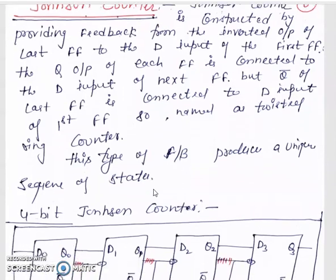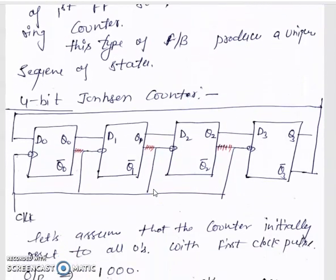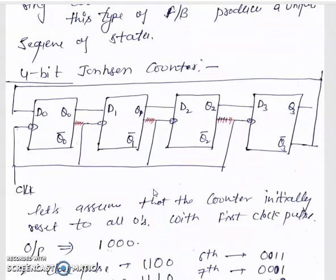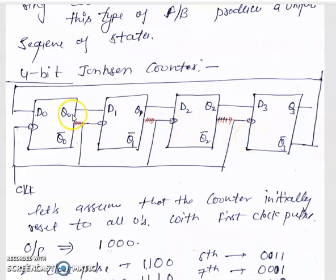Next, let's start with an example — a 4-bit Johnson counter using D flip-flops. A D flip-flop pulls the input to the output: if we feed a 1 input, the output is 1. For a 4-bit counter, n equals 4, so the number of flip-flops required is 4. We label them D0, D1, D2, and D3, with normal outputs Q0 and inverted outputs Q0-bar respectively.